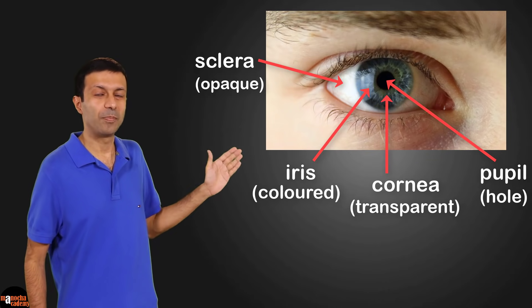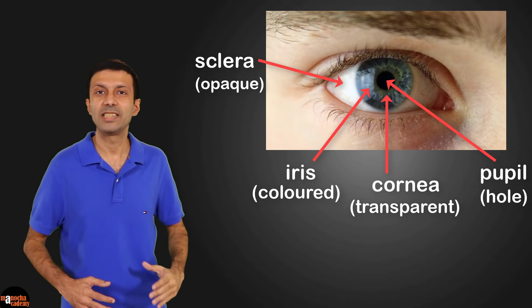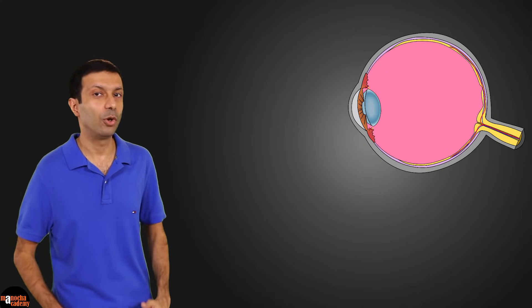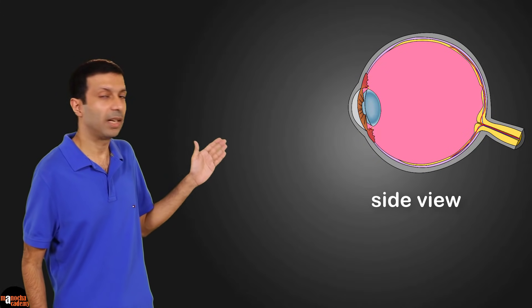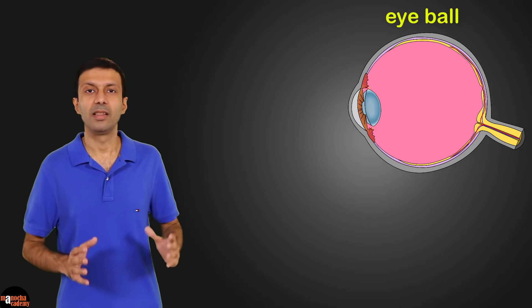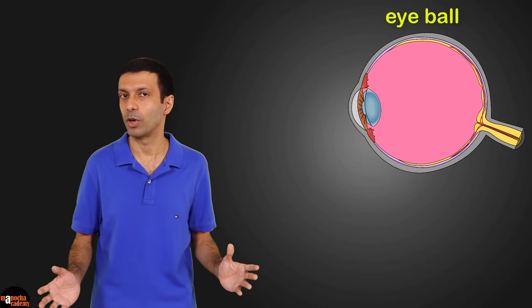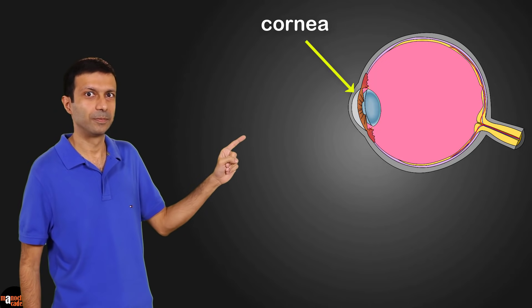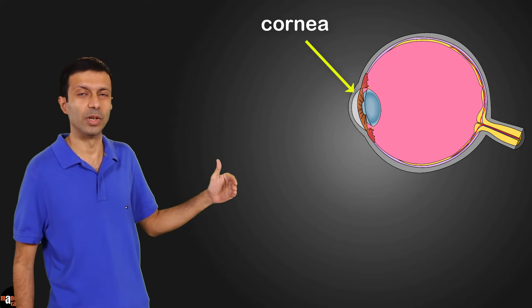So that was just the front portion of the eye. Now let's take a look at the full eye and what's inside it. Looking at the side view, the eye is approximately spherical in shape, so we call it the eyeball. The eyeball has a diameter of approximately 25 millimeters. The front layer of the eye is called the cornea, and the cornea bulges outwards.